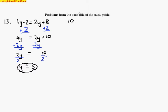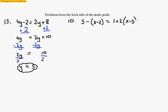Number 10 is a little bit more difficult because we have a parenthesis to remove. It says 5 minus and we have a parenthesis, so that means we need to do the work inside the parenthesis if we could — but we can't. So we're going to end up having to use the distributive property. This all equals 1 plus 2, and the 2 is being multiplied by a difference of x and 3.